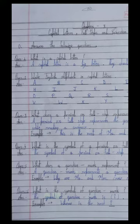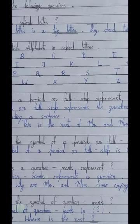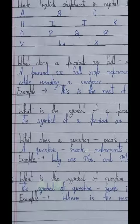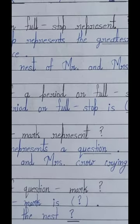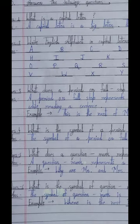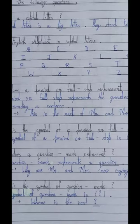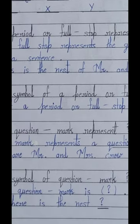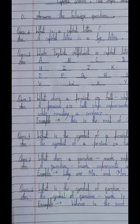Question 6, the last question of this exercise: What is the symbol of the question mark? The symbol of the question mark is a hook type sign. For example: 'Where is the nest?' We can see in this sentence that it ends with a question mark. So the question mark symbol is the symbol of a question mark.